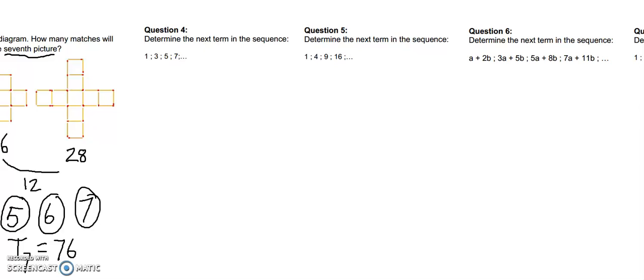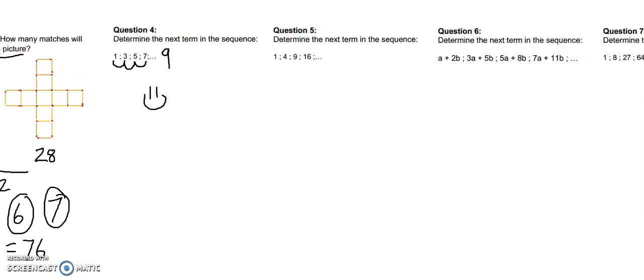You ready for the next one? Well, let's go to it. Determine the next term in the sequence. This is easy. One, three, five, seven. I'm sure you remember counting in grade two, maybe even grade one. We're doing all the odd numbers, so the next term is obviously going to be nine. That's a nice surprise, isn't it?